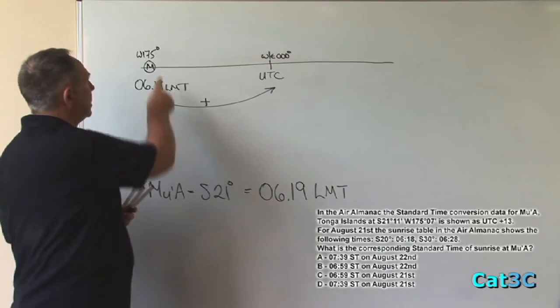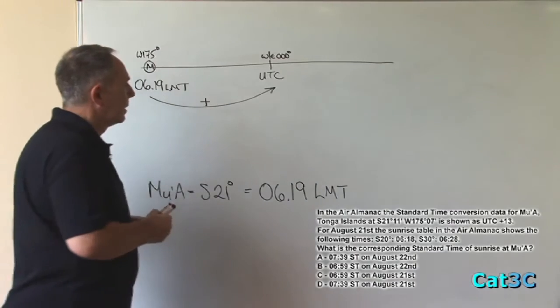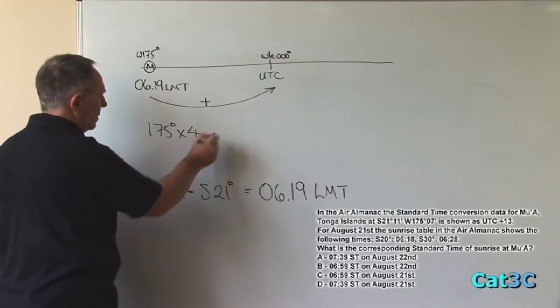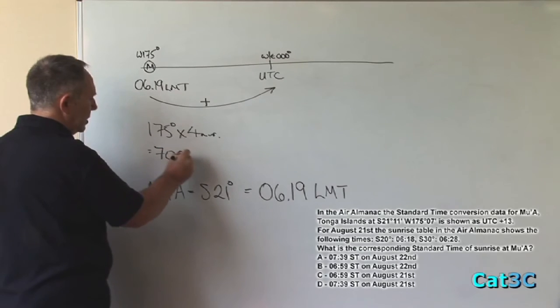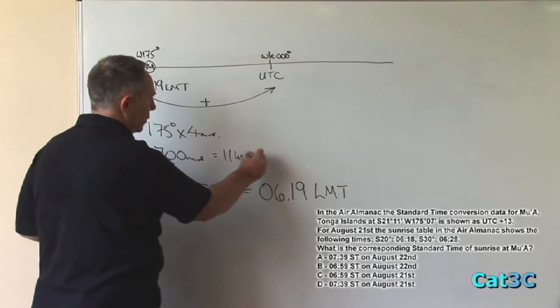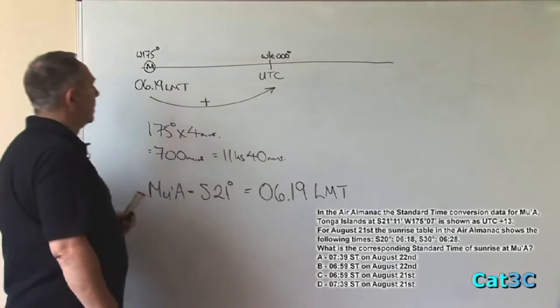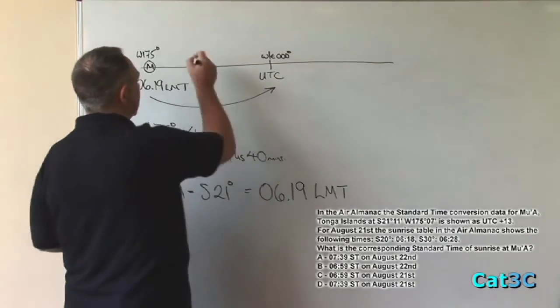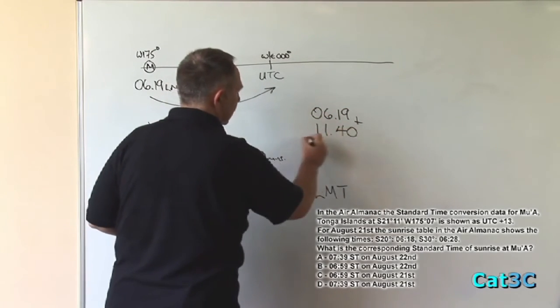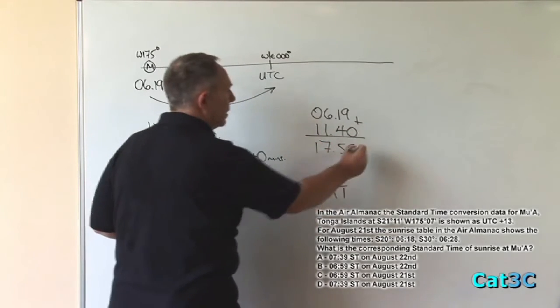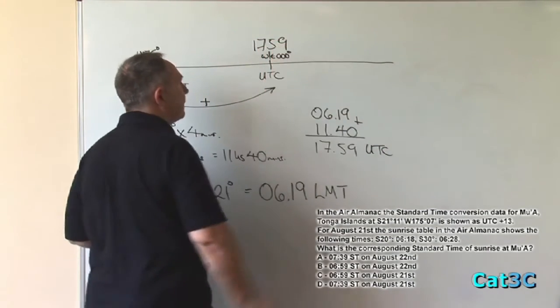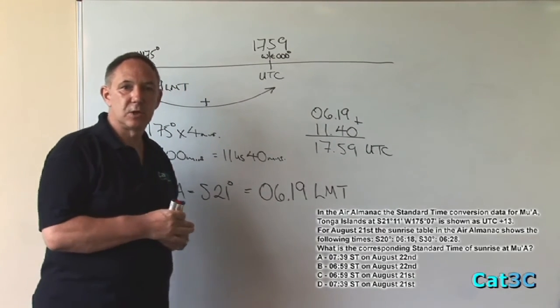The time difference is equivalent to 4 minutes per degree. Therefore, 175 degrees times 4 minutes equals 700 minutes. Divide that by 60 gives us 11 hours and 40 minutes. We have to add that onto 619. So if we take 619 plus 1140 gives us 1759 UTC. So the time at UTC is 1759. Remember, that is on the same date, on the 21st of August.